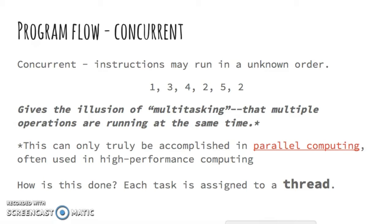Not surprisingly, most programs with a GUI, or graphical user interface, use concurrent programming and assign each task to a spawned thread. This way the program will prioritize user-facing threads when necessary, avoiding most hang-ups or freezes.